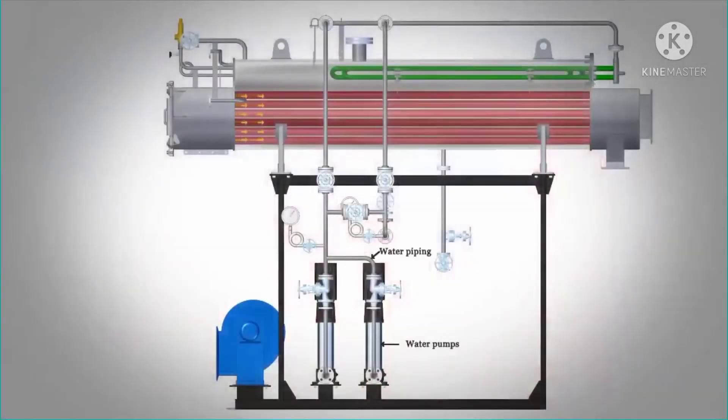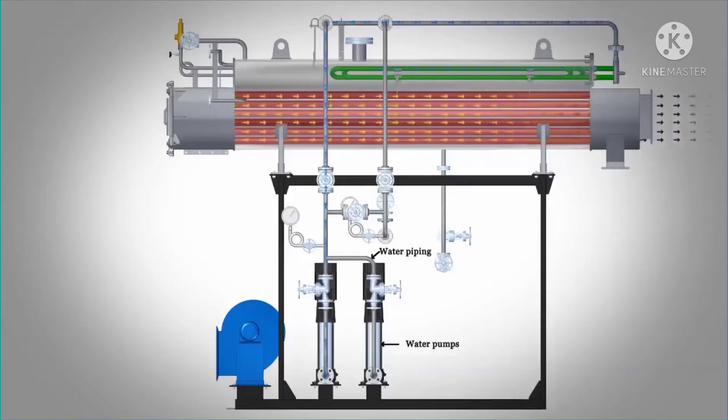The feed water pumps transfer the water from the main water tank to the boiler drum through a set of piping and valves. When WHR is used, the feed water is passed through a coil of WHR and is heated up before entering the drum.